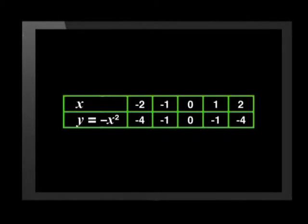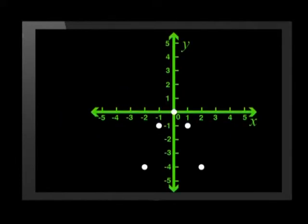We have made a table of values for y equals negative 1x squared here. And here I plotted the points for this graph. If I join them, this is what the new graph looks like. It's flipped over, but it's still the same shape as the parent graph.